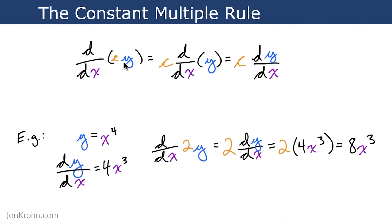According to the constant multiple rule, we can grab the constant 2, bring it out in front of the differentiation operation, and then we can calculate dy dx separately.